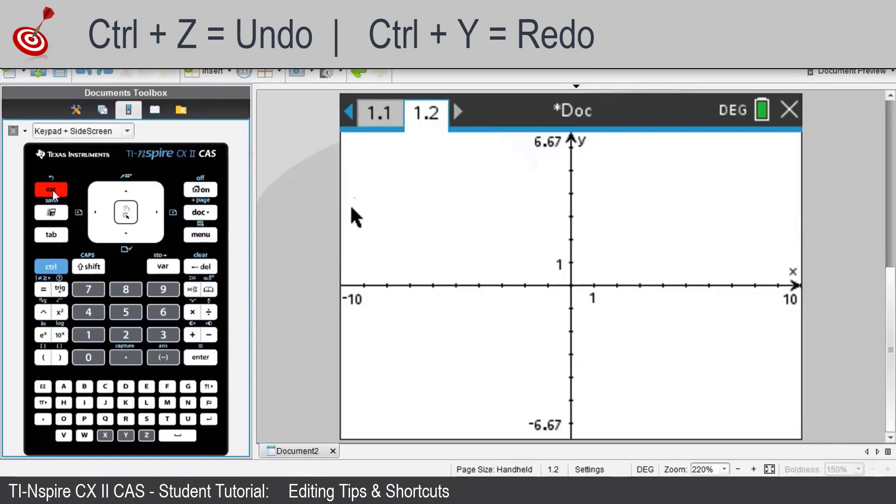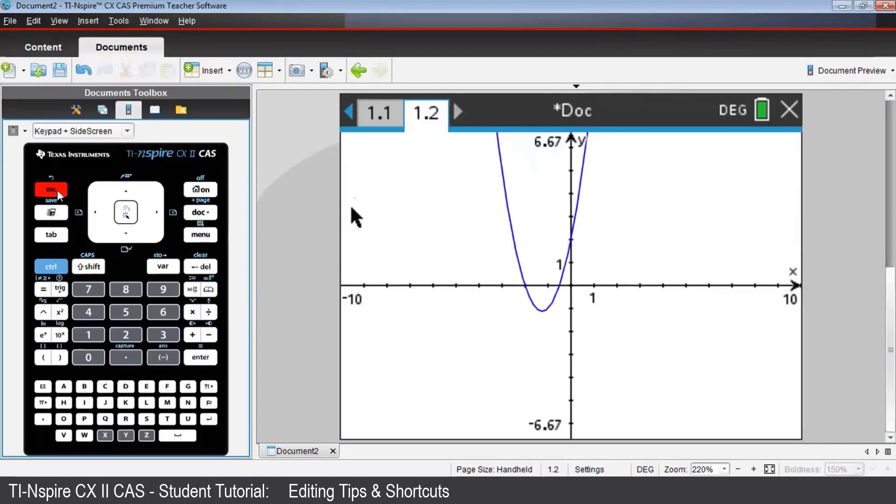And if you change your mind again, and want to reinstate the graph, to redo, simply press Shift, then Escape.